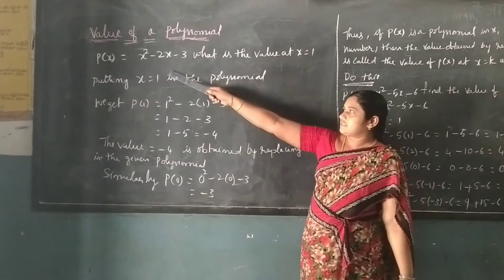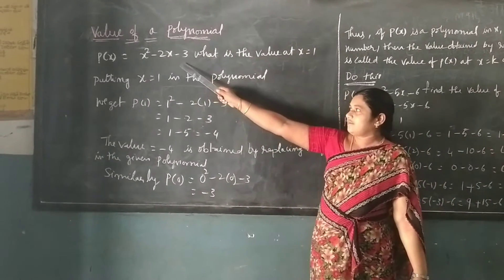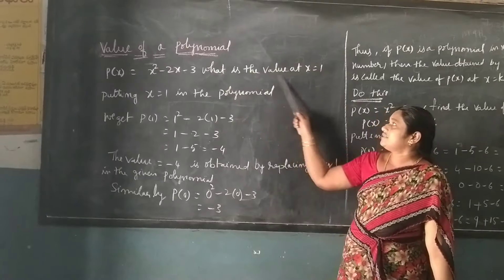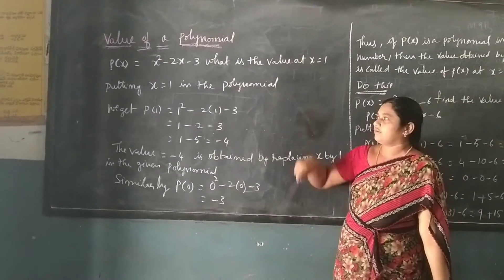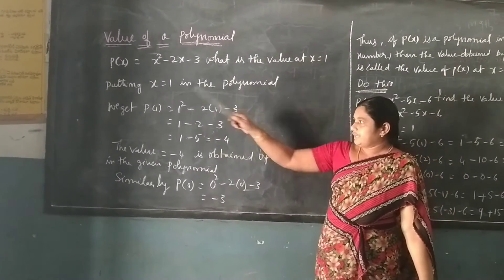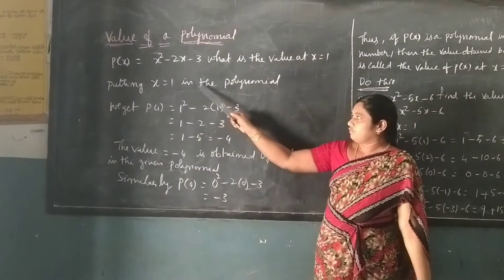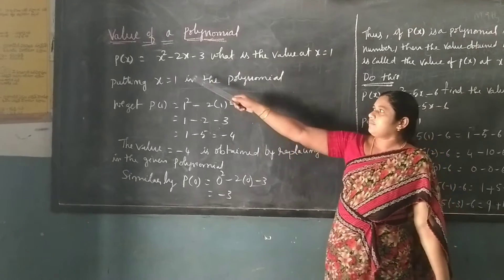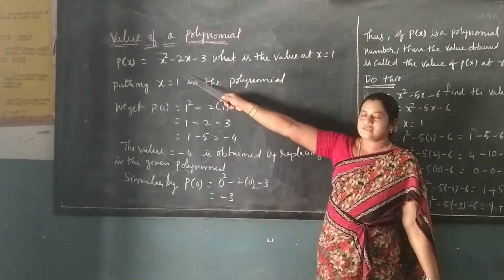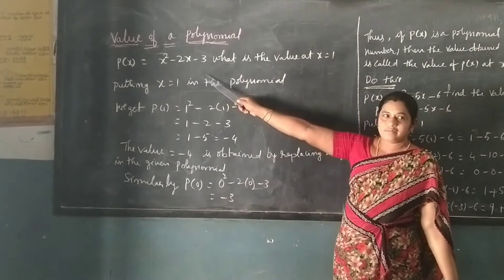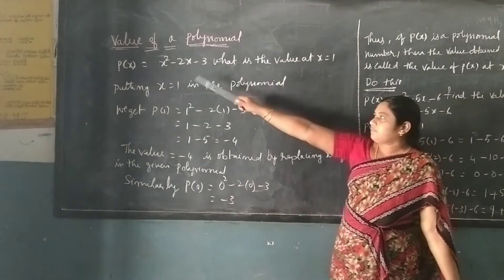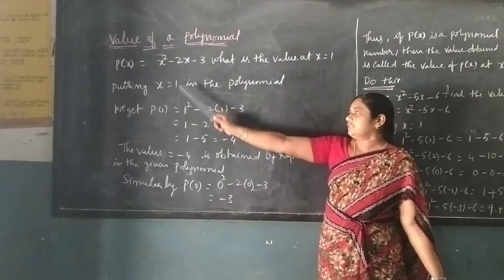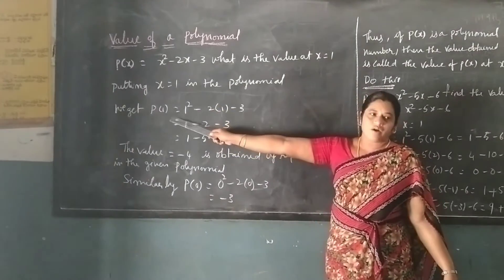Let t(x) = x² - 2x - 3. What is the value at x = 1? We put x = 1 into the given polynomial, replacing x with the value 1.